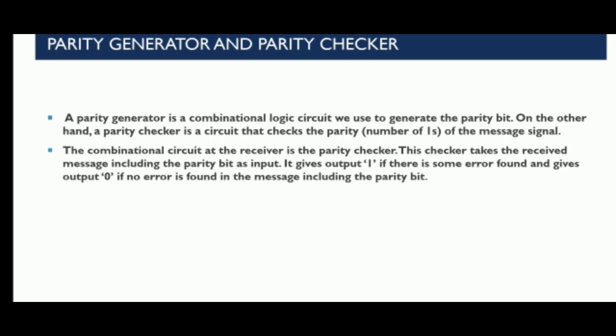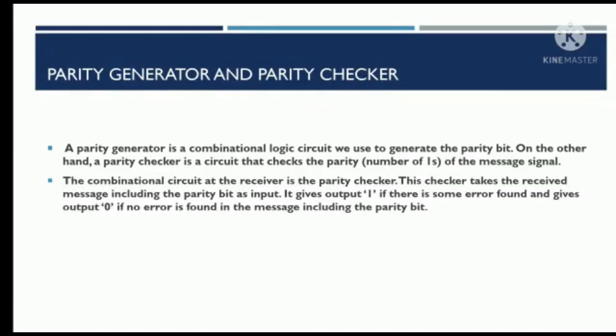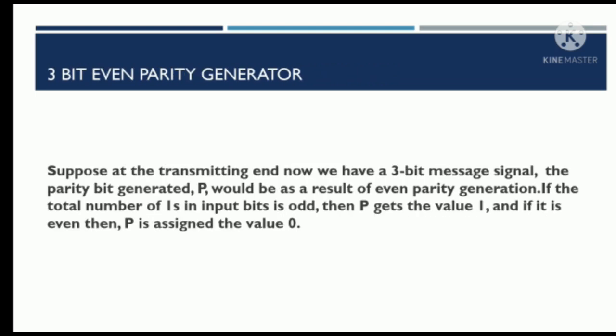A parity checker is a circuit that checks the parity of the message signal. The parity checker is used at the receiver's end and checks the possibility of errors — whether the given data has been transmitted correctly or the data has been overwritten.